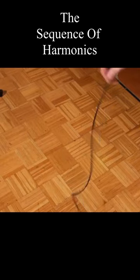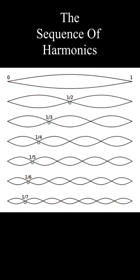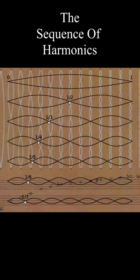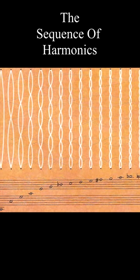So this same principle of dividing the string more and more so that the oscillating chunk gets from a half to a third, quarter, fifth, sixth and so on gave us the entire sequence of harmonics which of course gave us all the notes at their natural pitches in relation to a basic frequency.